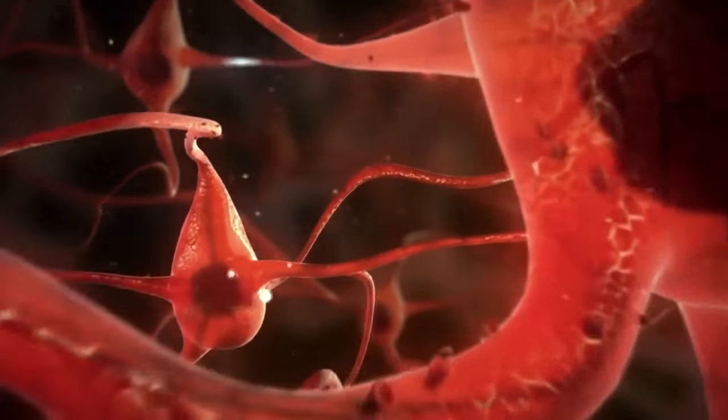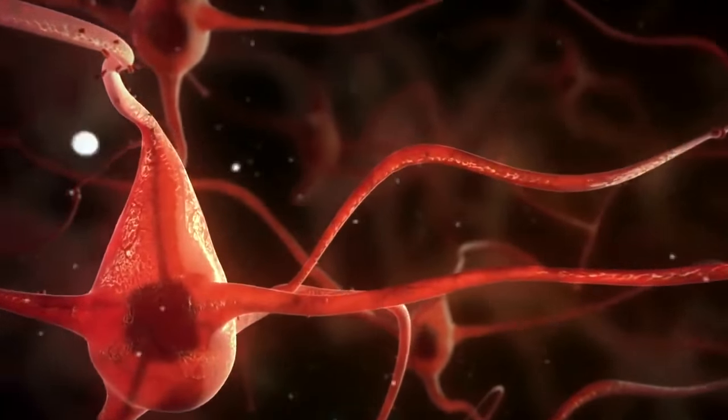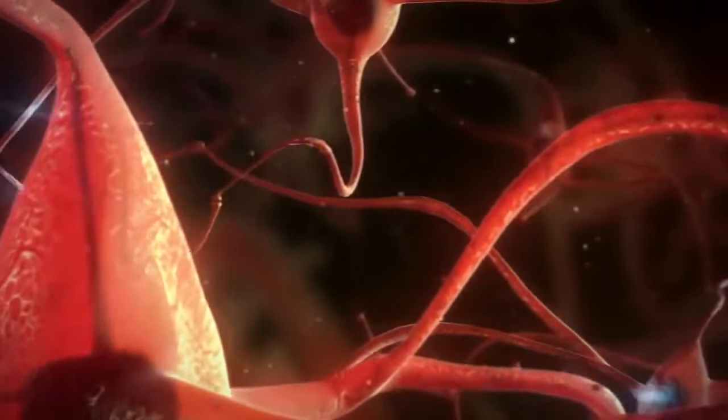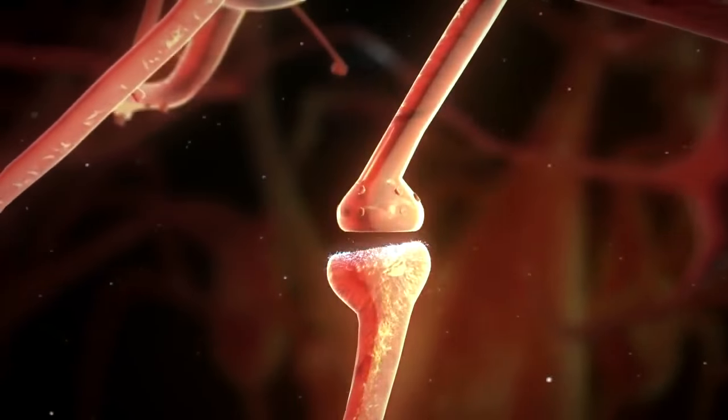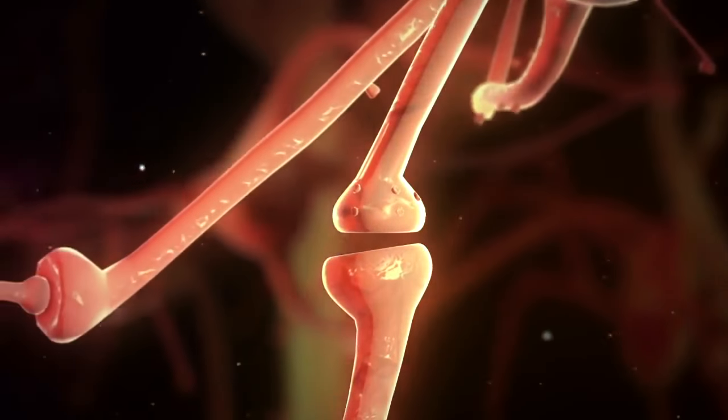We know that the brain is made up of neurons and that these are interconnected to form a vast network. These connections, known as synapses, enable the transmission of information from one neuron to another.